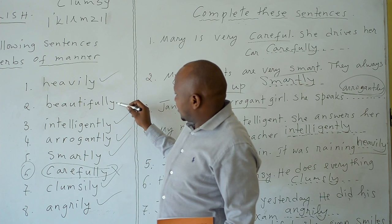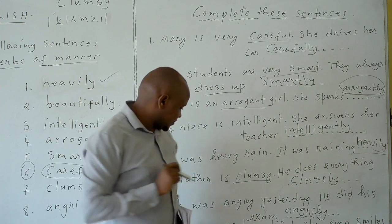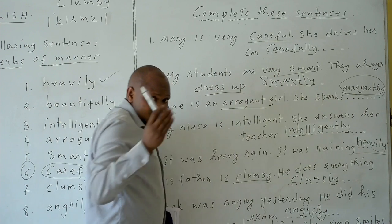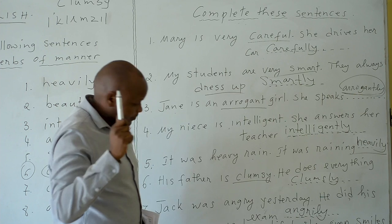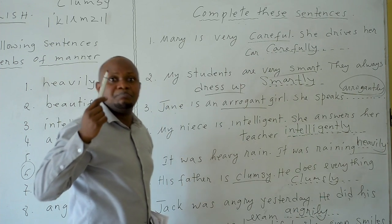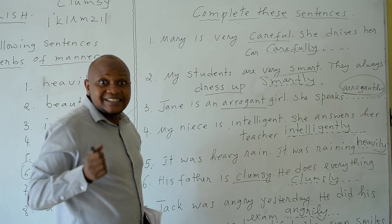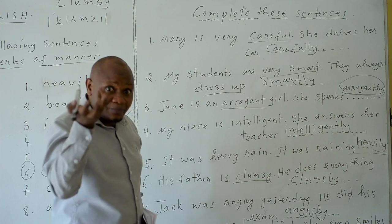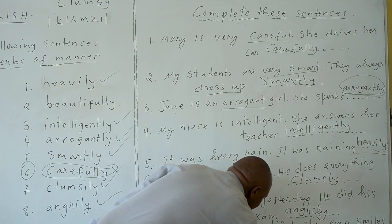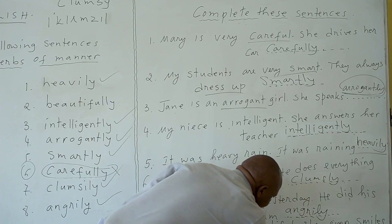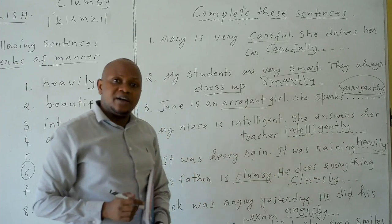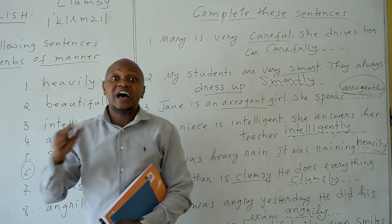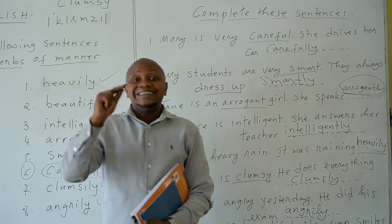We are almost done. The last one: 'This queen is beautiful. She even smiles beautifully.' Because she is beautiful, the adverb is beautifully. She even smiles beautifully. Have you understood how to use adverbs of manner in sentences?